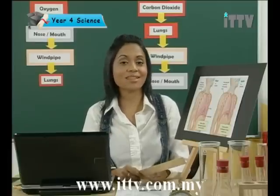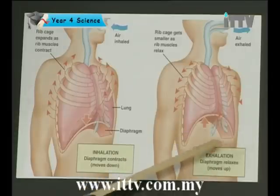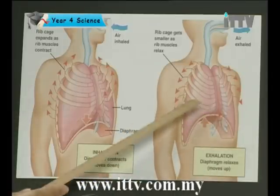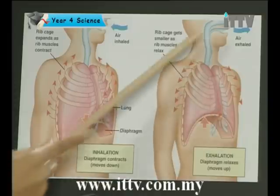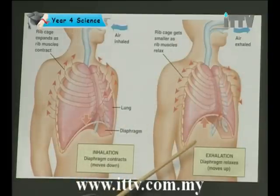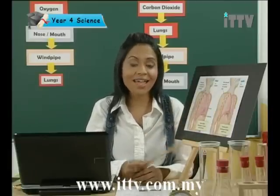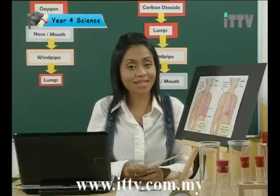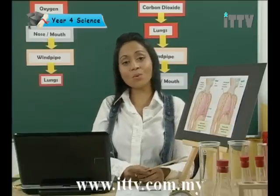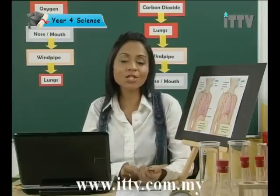Shall we see what happens during the exhalation process? Your diaphragm relaxes and curves up. Your lungs contract so that the air can be exhaled out. Your ribs return to the normal position. The exhaled air is filled with carbon dioxide. Do you understand how the process of inhalation and exhalation takes place?